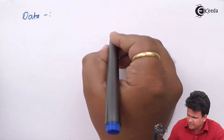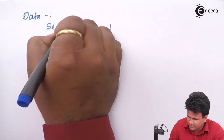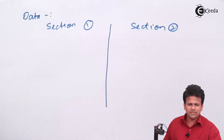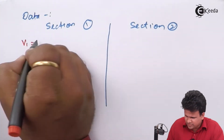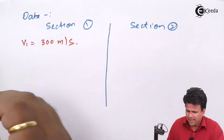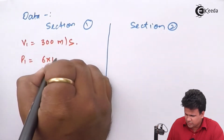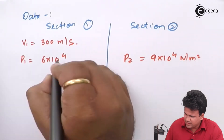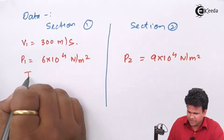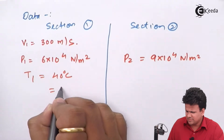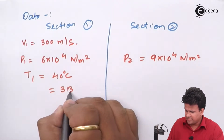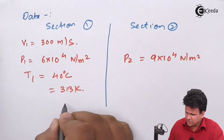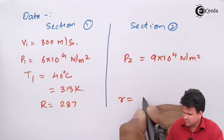At section 1: velocity V1 = 300 meters per second, pressure P1 = 6 × 10⁴ Newton per meter square. At section 2: pressure P2 = 9 × 10⁴ Newton per meter square. The temperature T1 = 40 degrees Celsius, which converts to 313 Kelvin (absolute).